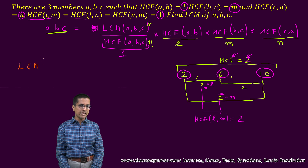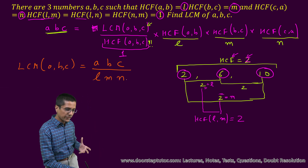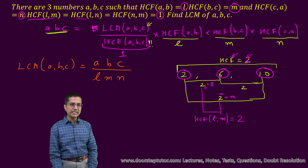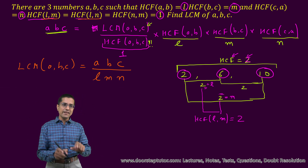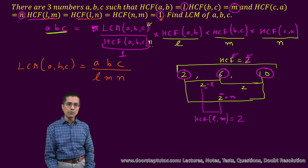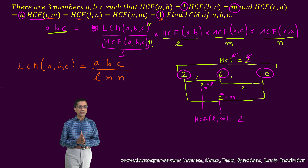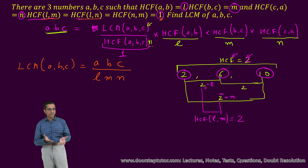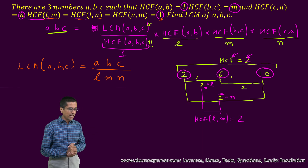We can simply write: LCM of ABC equals ABC divided by L·M·N. The key insight is that if the pairwise SCF of the SCFs equals 1, it means there are no common factors between the three numbers A, B and C to begin with. Once you realize that, this problem becomes very simple and it can be asked in any competitive exam.